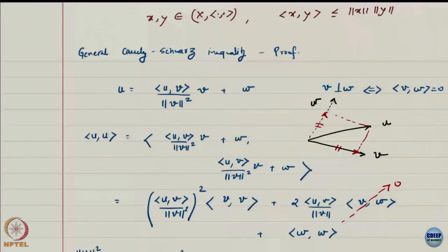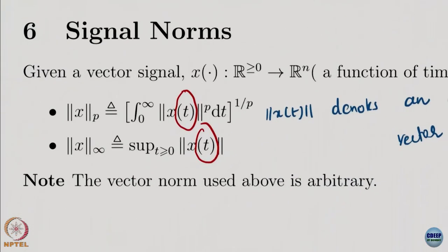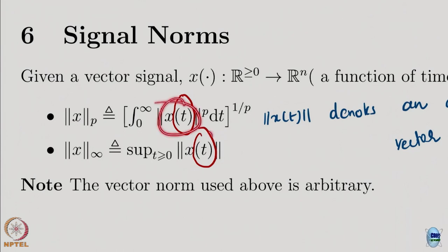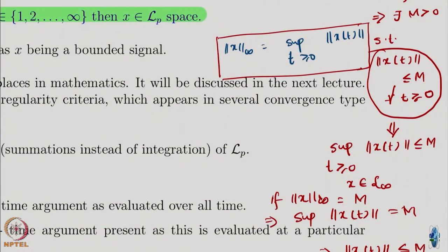Whenever I am computing a signal norm, there is no time argument. But in all the vector norm computations, you see the time argument, because without freezing time I do not have a vector — I have a signal. Once I put a particular time value in, I have a vector, then I can compute a vector norm. L-infinity signals are bounded signals — anything in L-infinity space is a bounded signal.